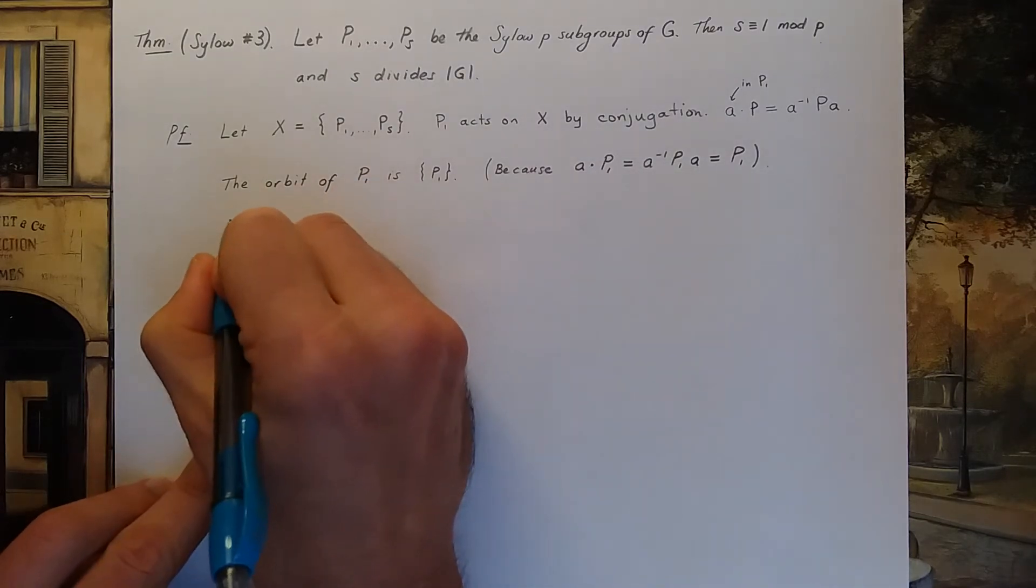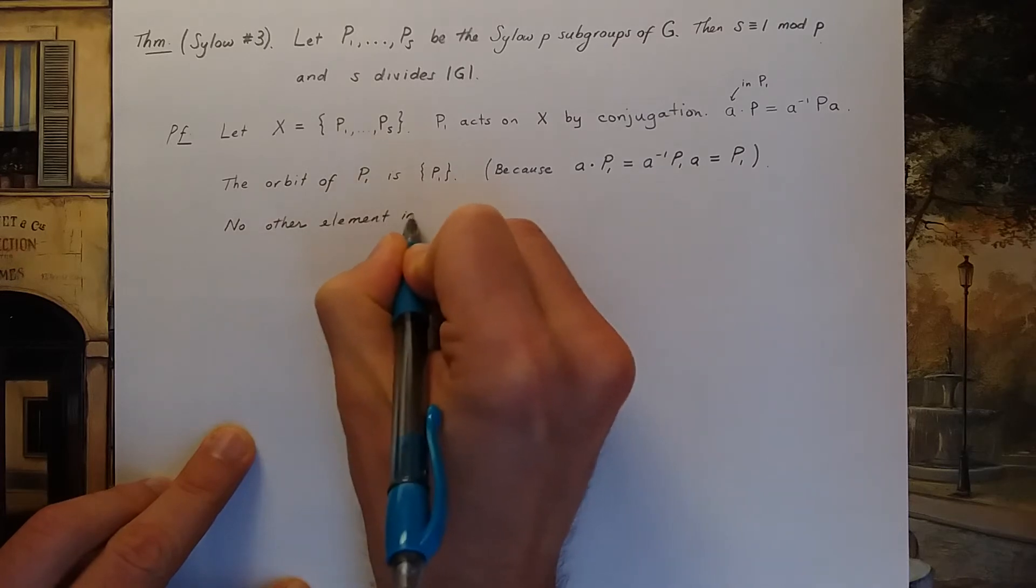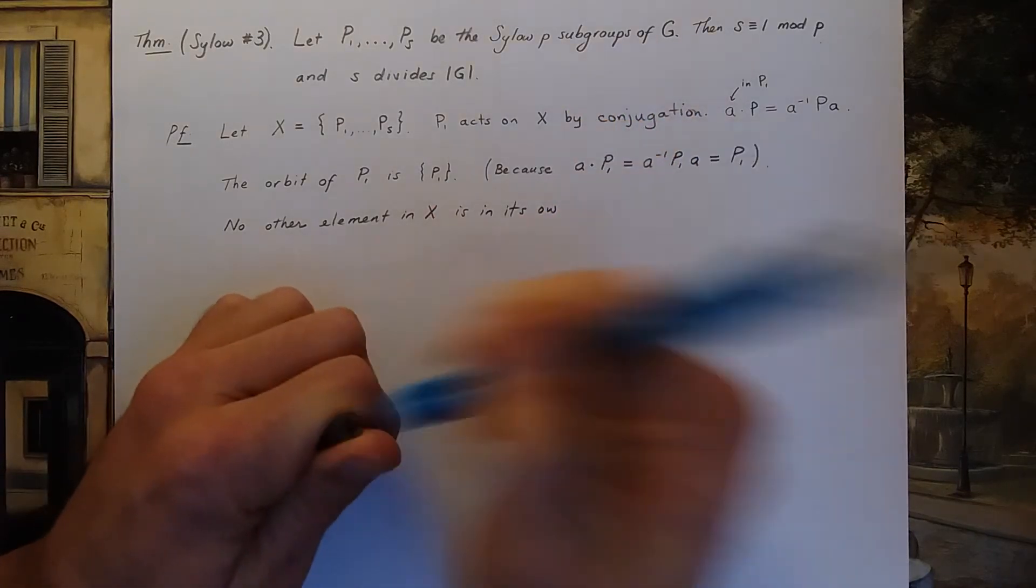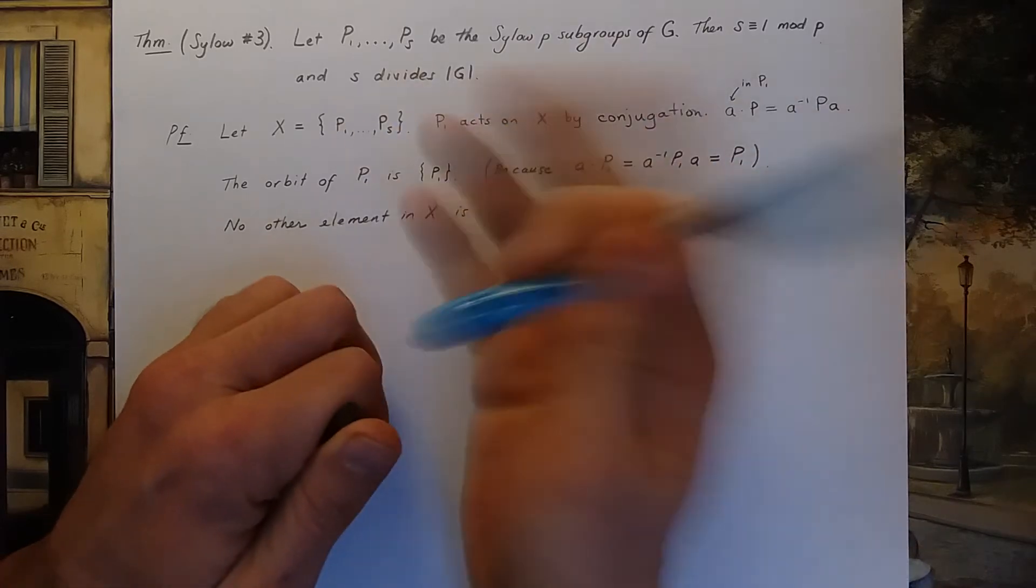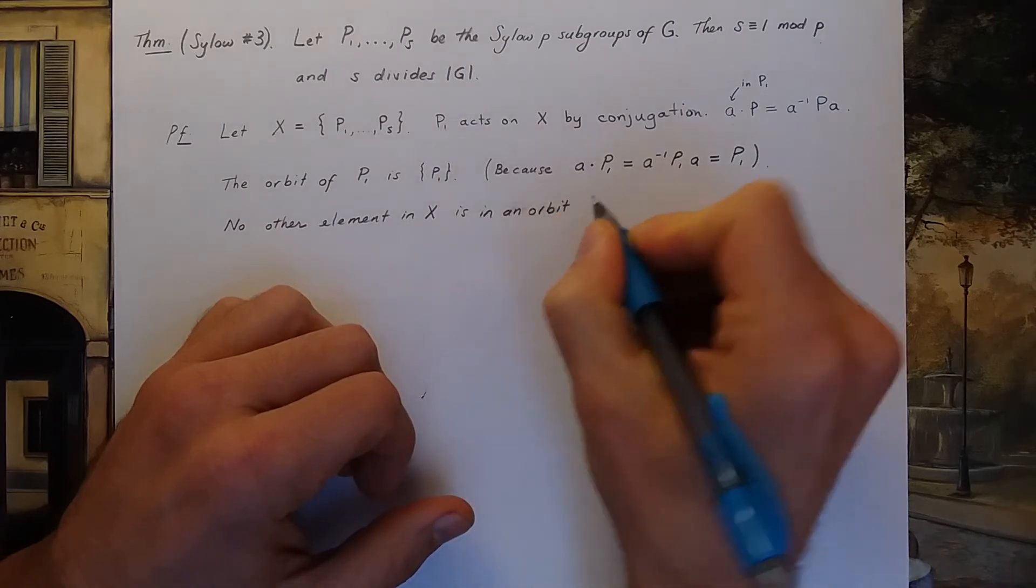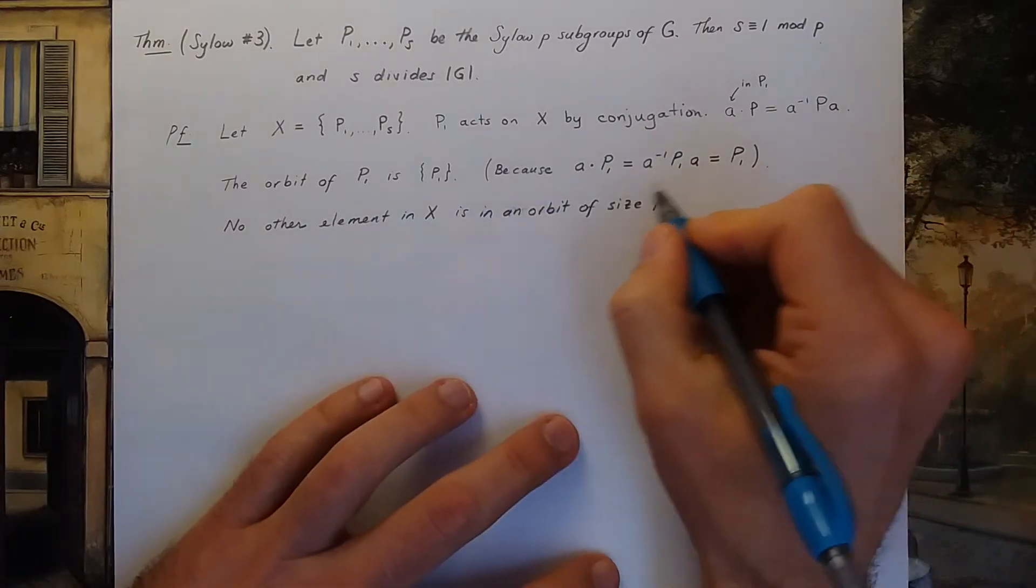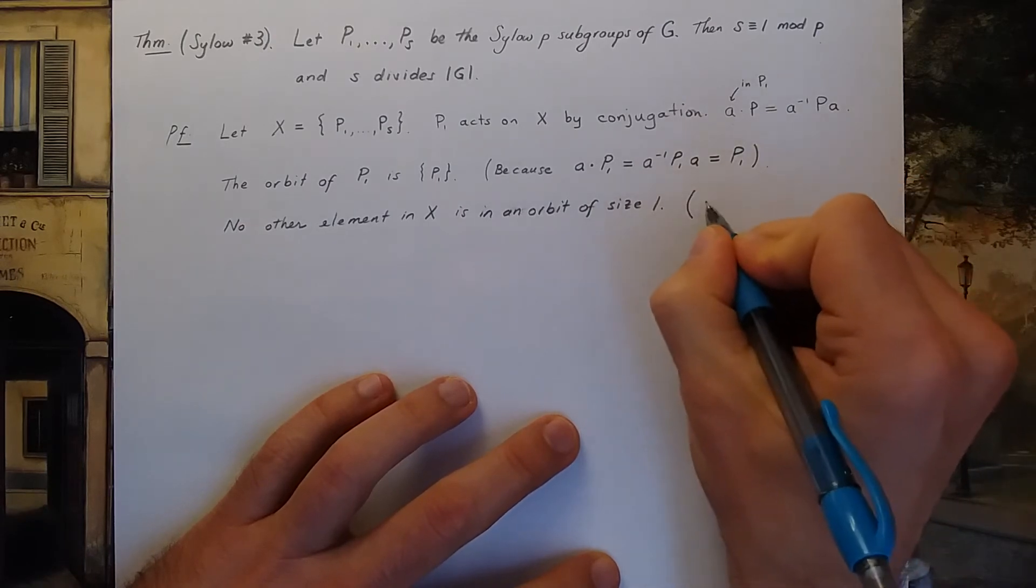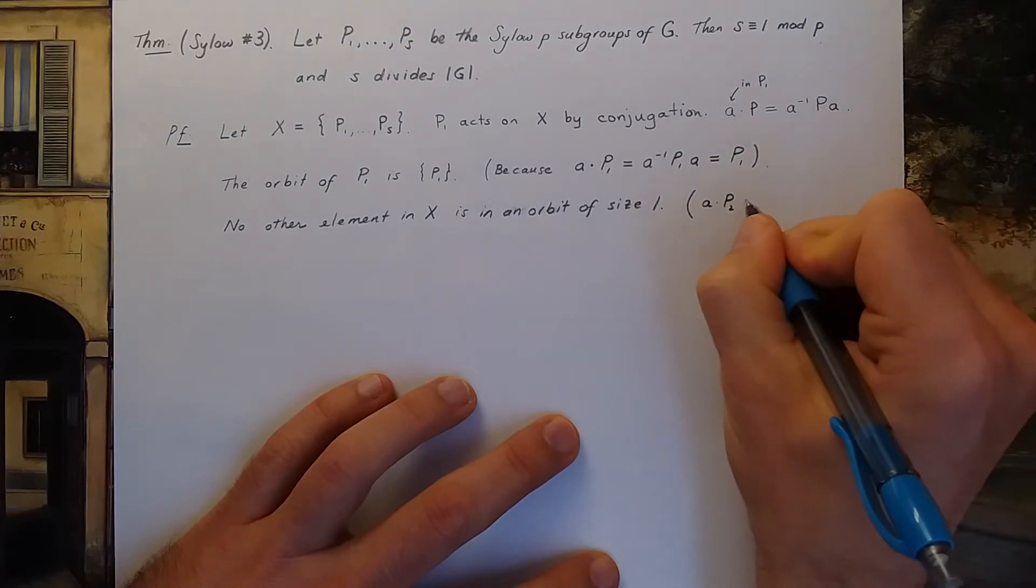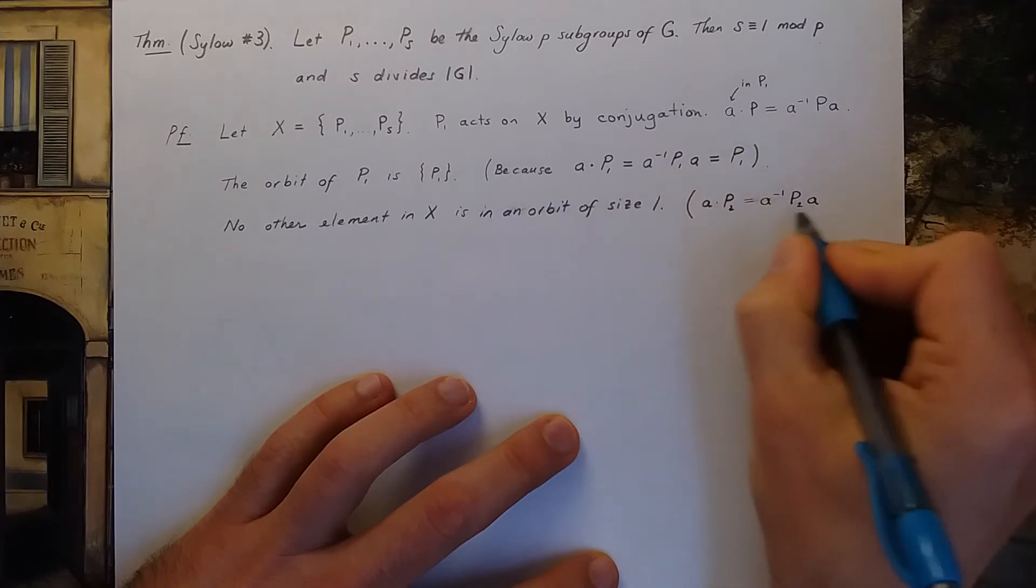Furthermore, no other element in X is in an orbit of size 1. Why is that? Well, it's similar reasoning here. For example, a·P₂—this is a⁻¹P₂a—this cannot always equal P₂.